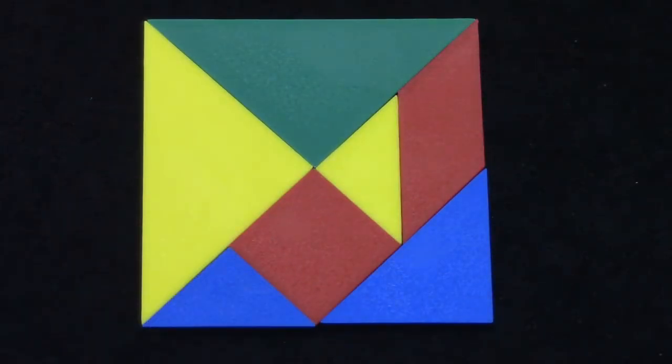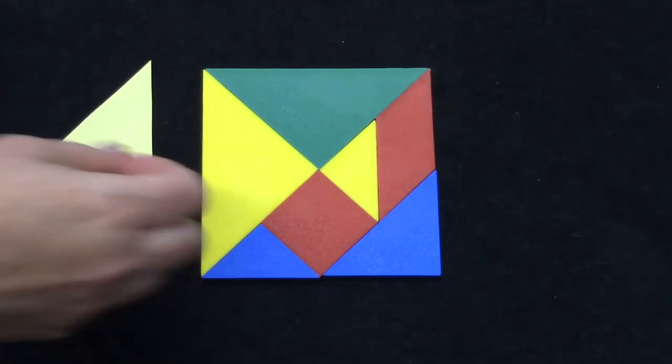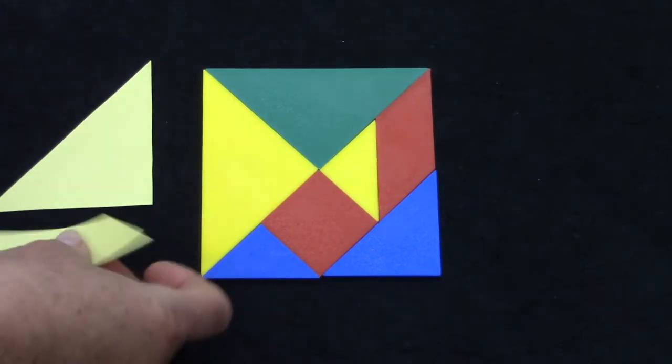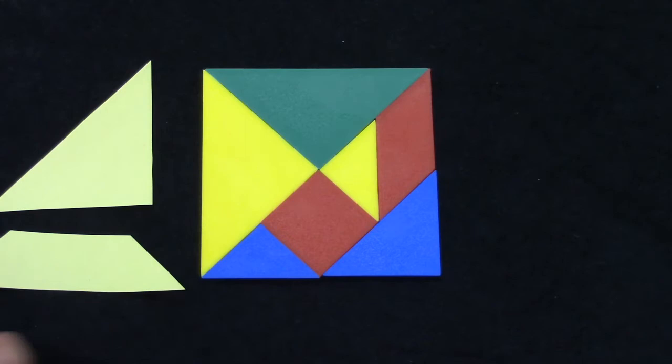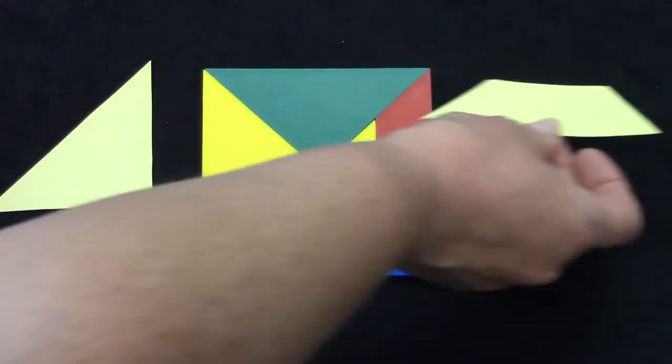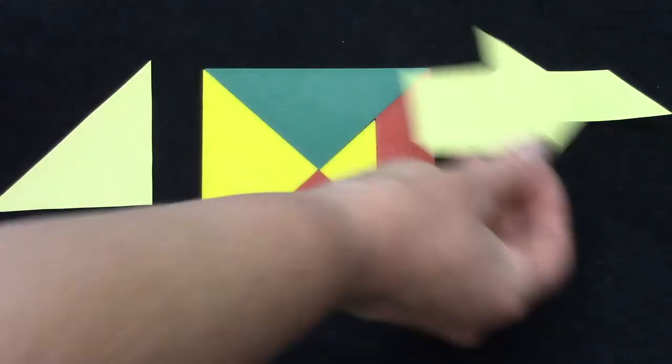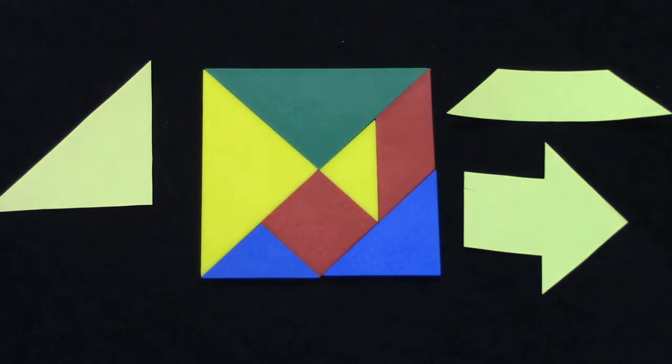Today we're going to be using these pieces to cover different shapes. Let's take a look. I have some different shapes here and we're going to see if we can cover these shapes using just the Tangram pieces that we have here today.